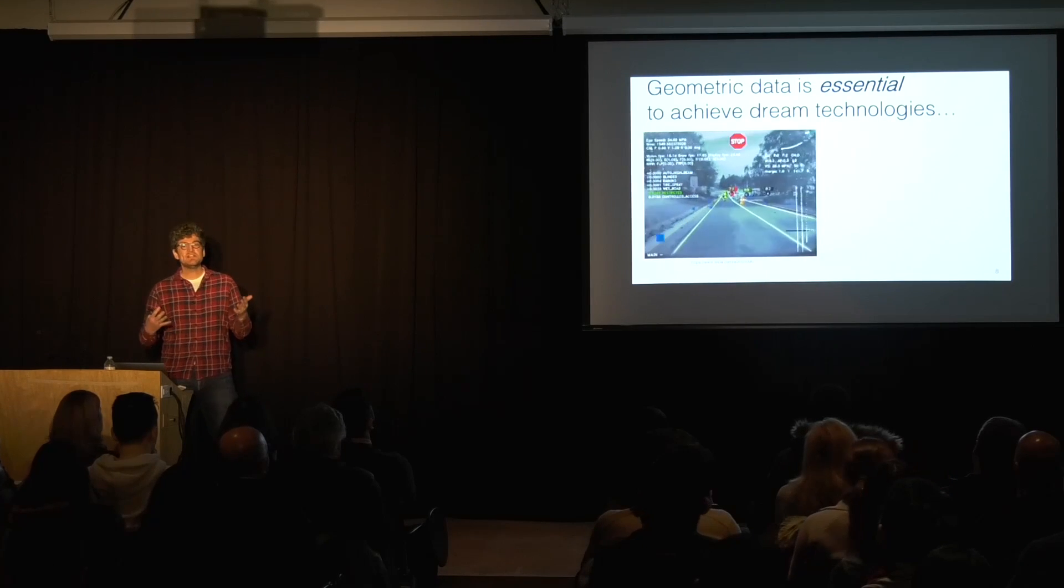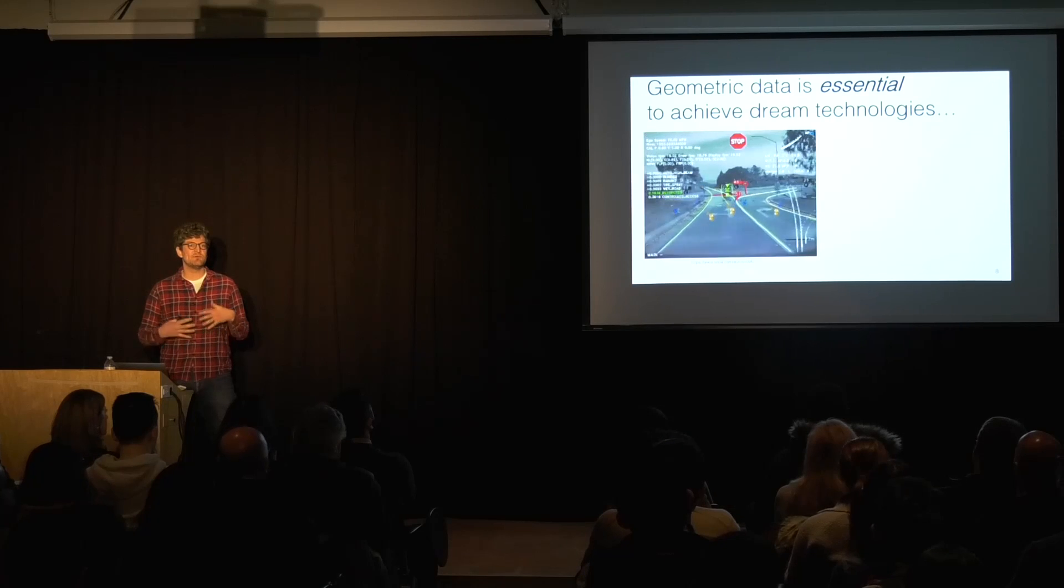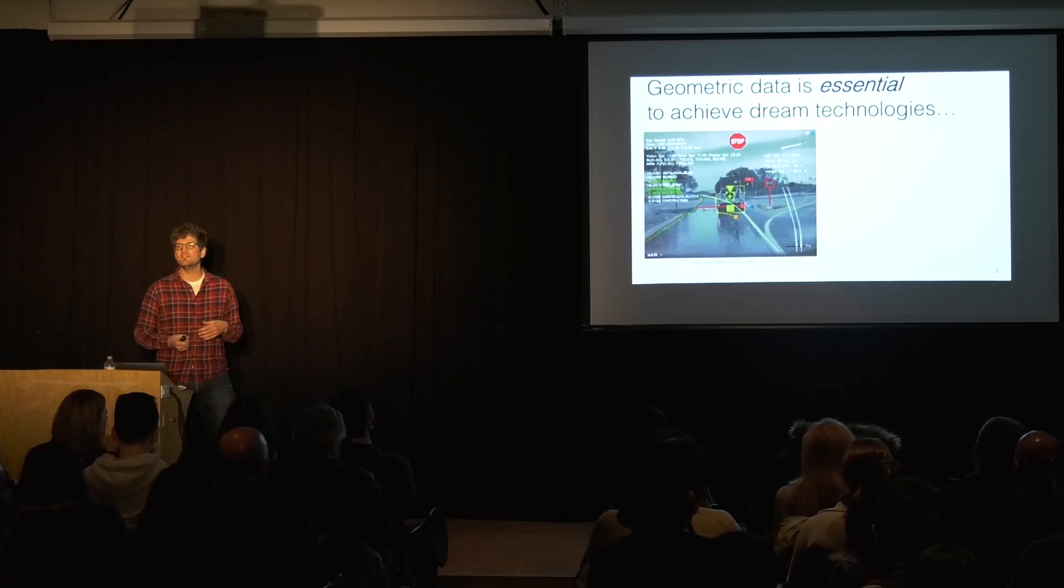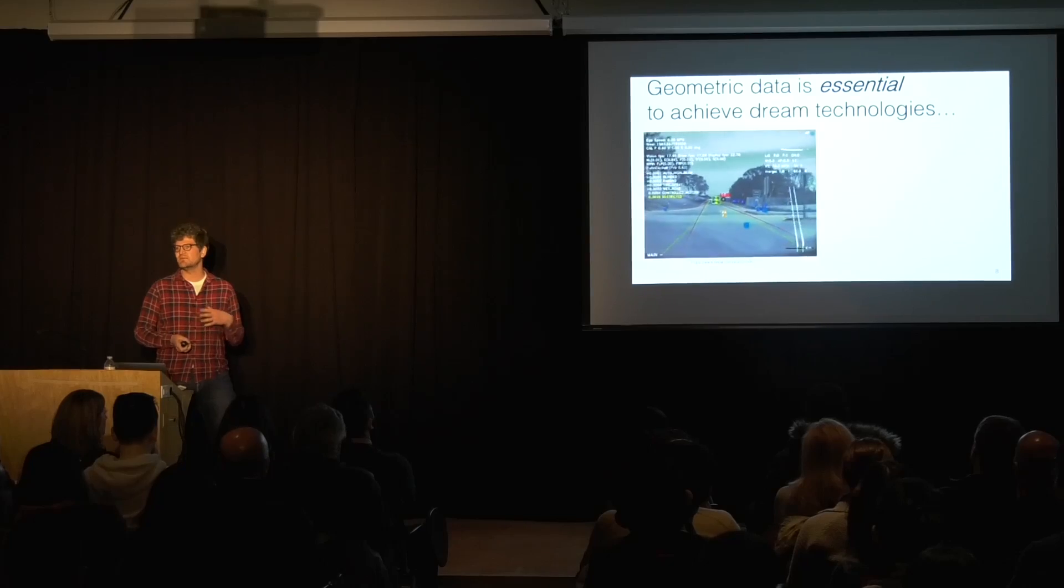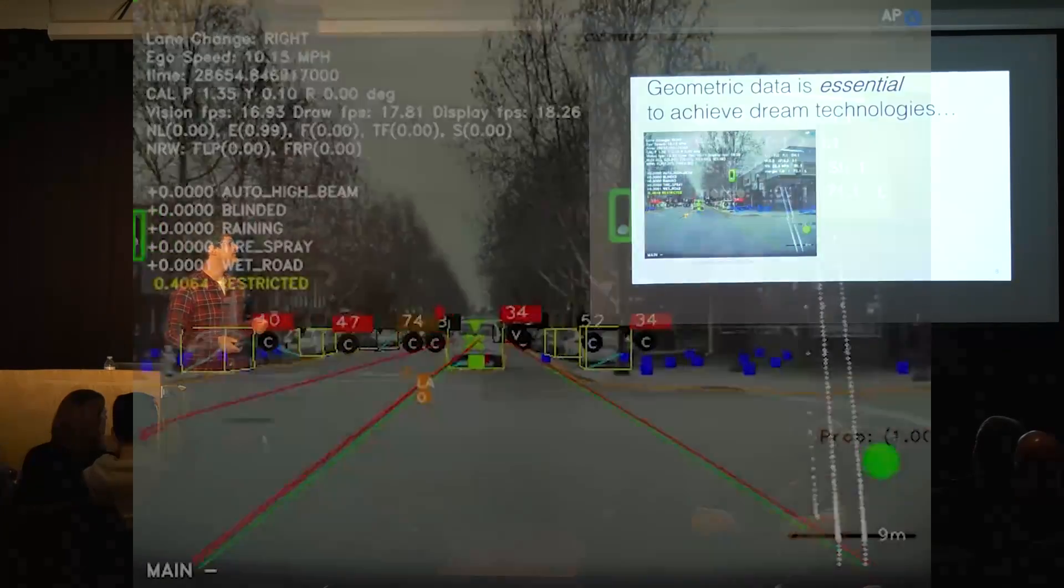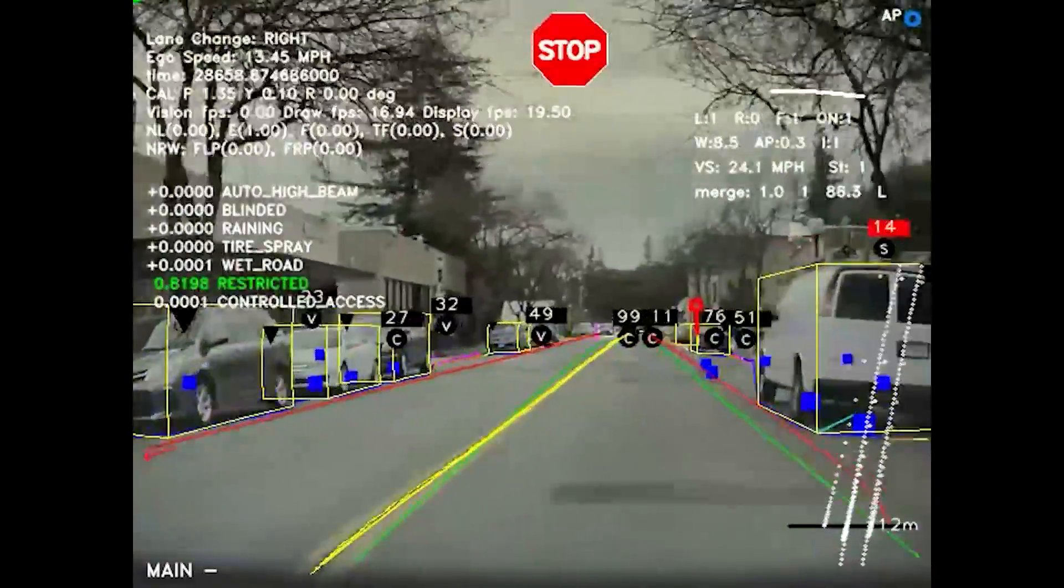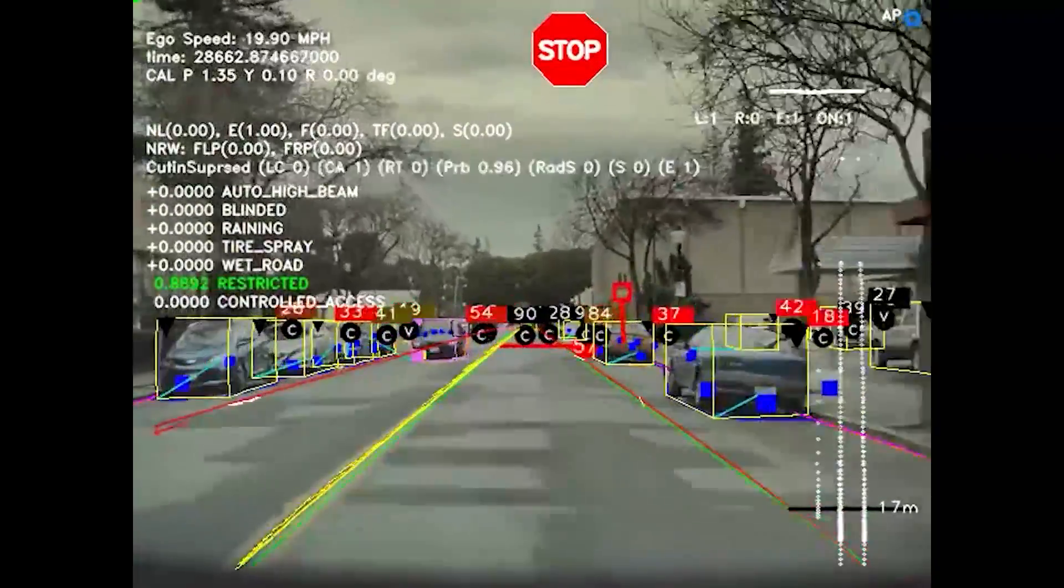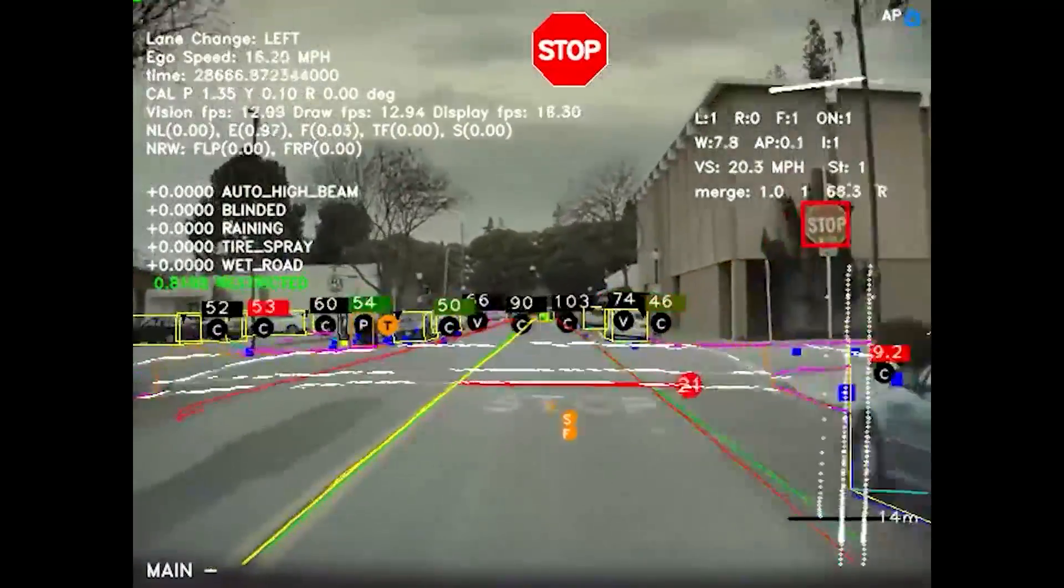So as we look to applications that we would like to see, dream technologies like self-driving cars, you can see that geometry is really essential to these technologies. This is an example recently released from Tesla of what their AI self-driving car sees.